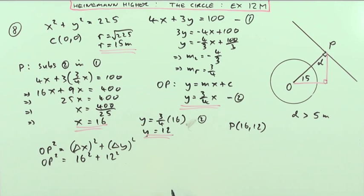But you know the answer to that straight away. I don't have to go through the Pythagoras for that. I know the distance OP. That's 4×4, that's 4×3, so this must be 4×5, which is 20.